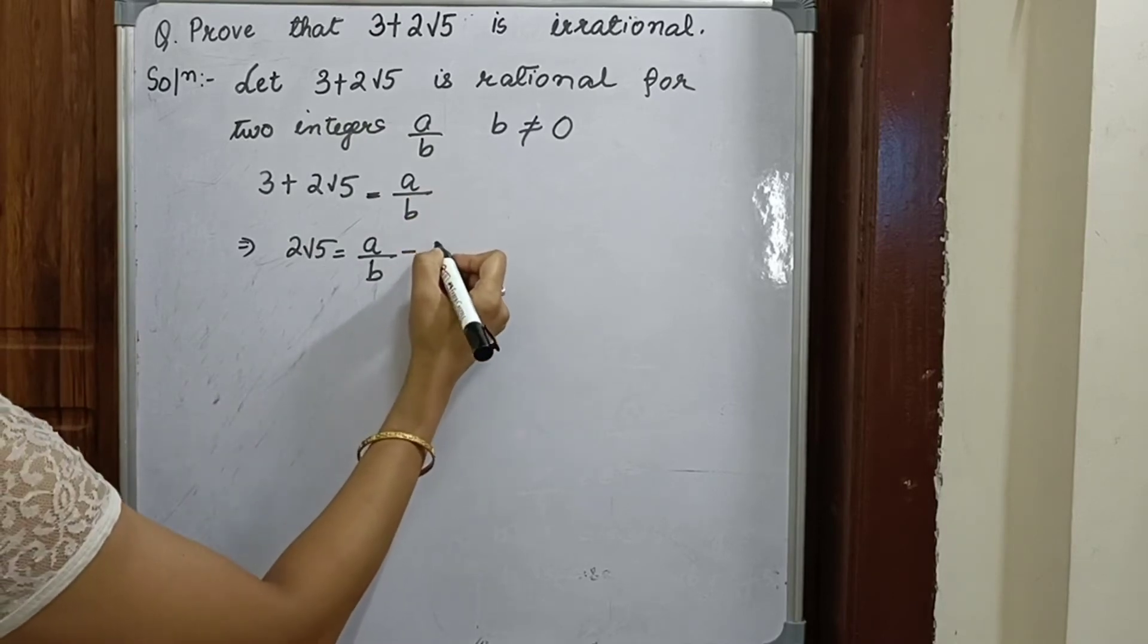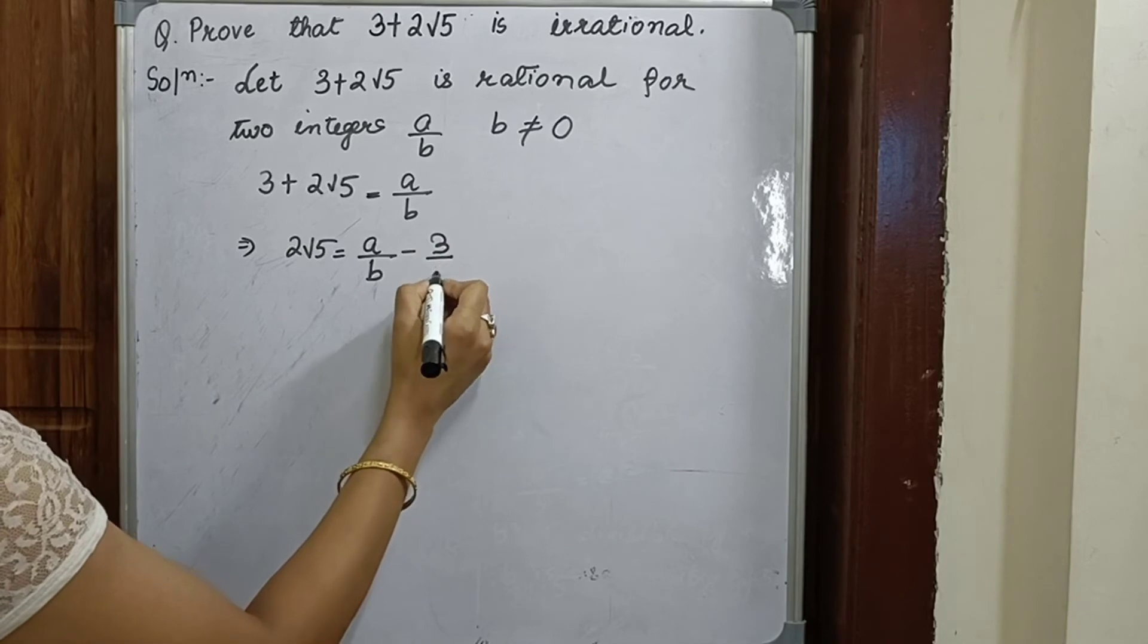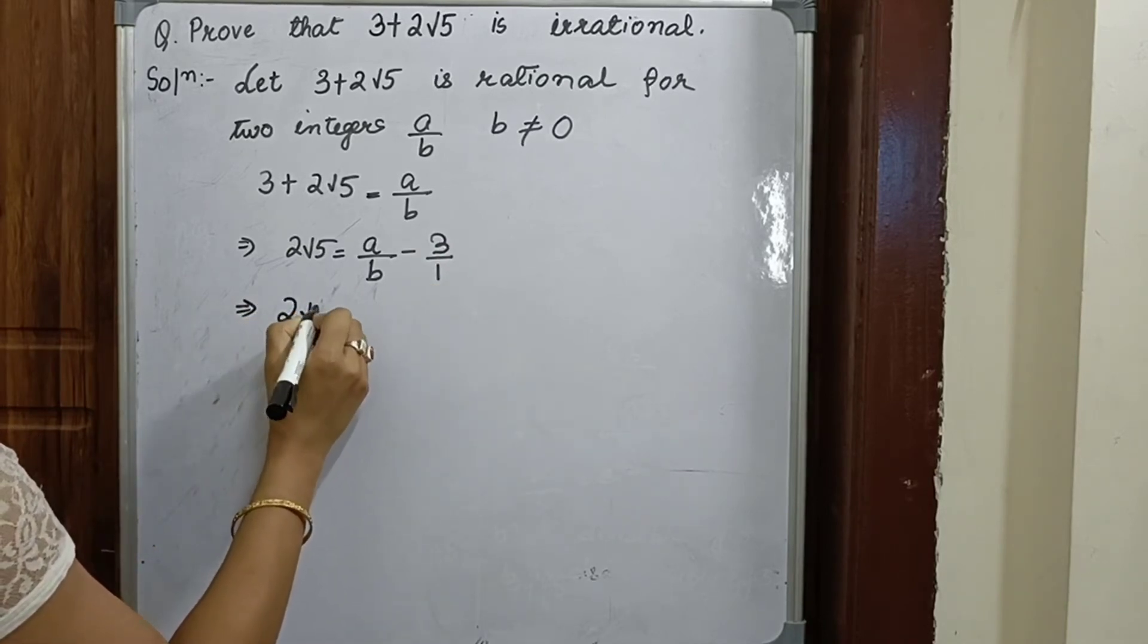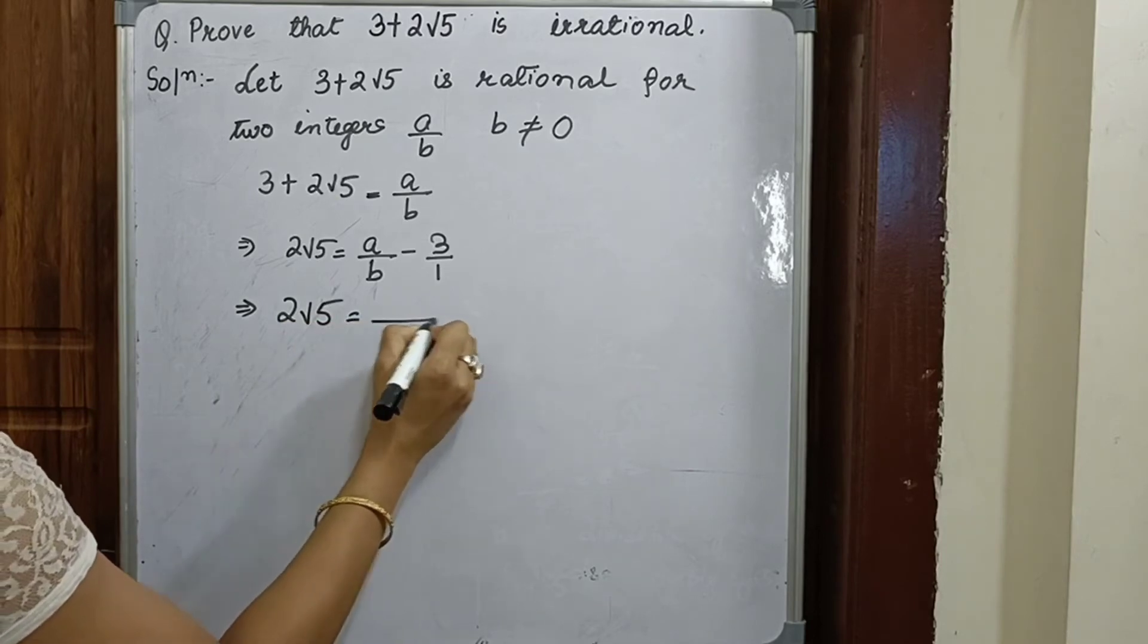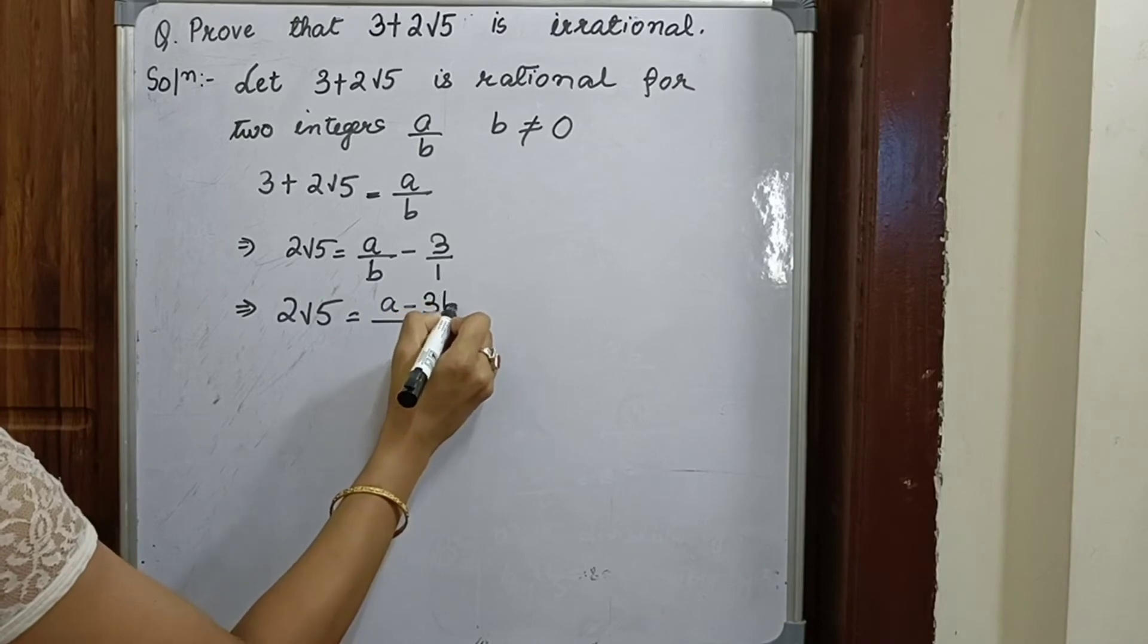If there is nothing in the denominator, we'll keep it as 1. So 2 root 5 equals, we'll take the LCM b, a minus 3b by b.